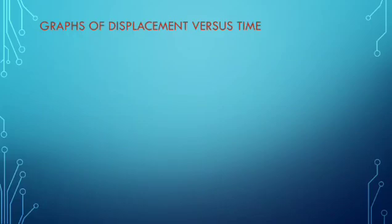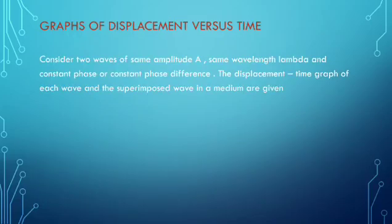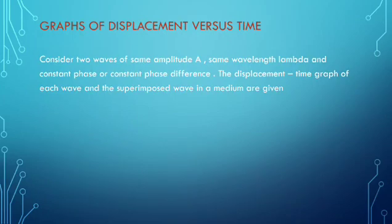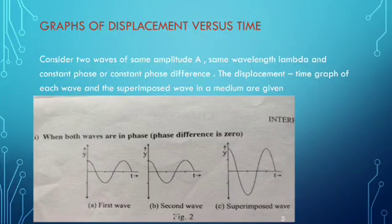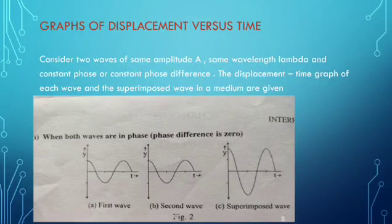Displacement is the graphical representation. Consider two waves of same amplitude A, same wavelength lambda, and constant phase difference. The displacement-time graph of each wave and the superimposed wave in the medium are given. First case: when both waves are in phase, phase difference is zero — the first wave and second wave.